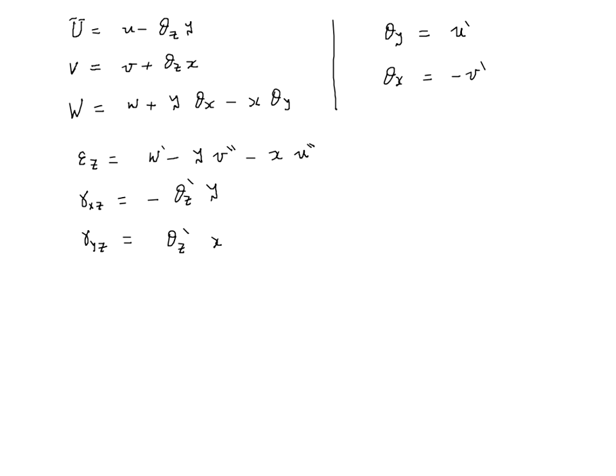So these things cause normal strains which generate normal stresses, while twist, which is theta_z, produces shear strains which produce shear stresses.